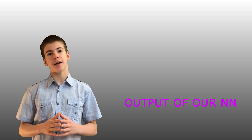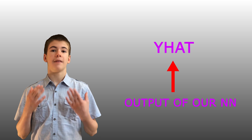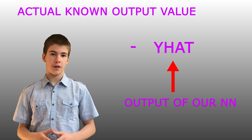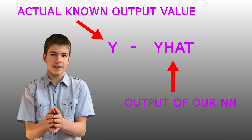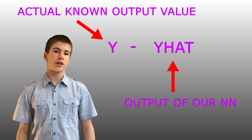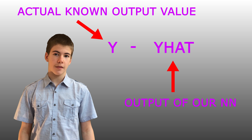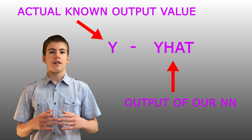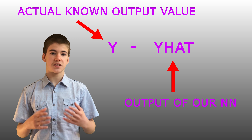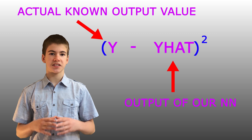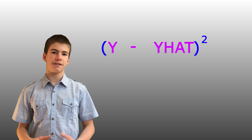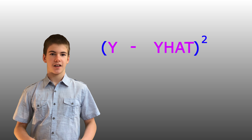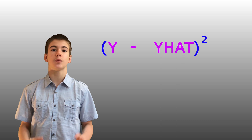We can achieve this by subtracting the output of our neural net, or y hat, from the actual known output value, which came from the raw data. The order that we subtract them in doesn't matter. We could have subtracted the real output from the output of our neural net. This is because we square the value, or in other words, simply multiply it by itself. One thing that this does is it makes the difference between the two outputs, or our cost function, always positive.